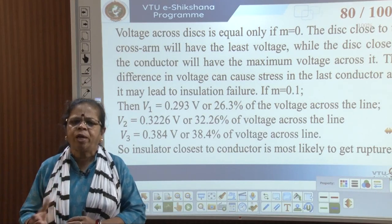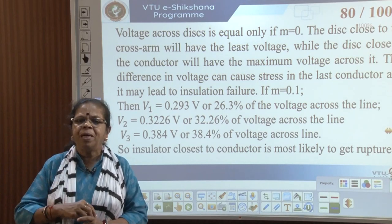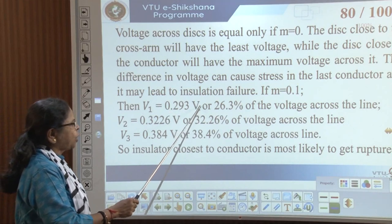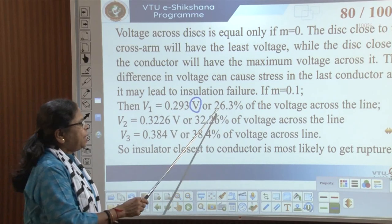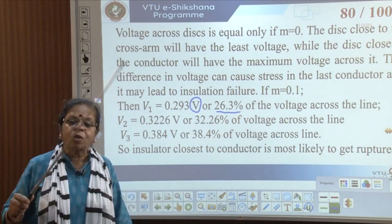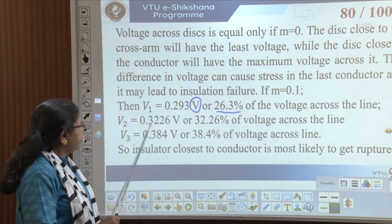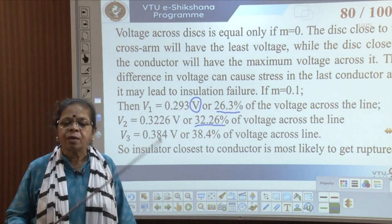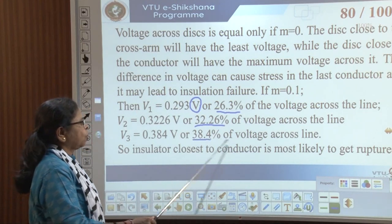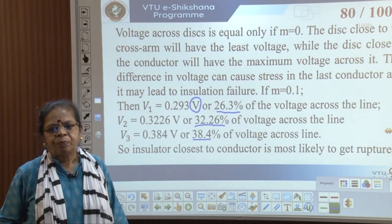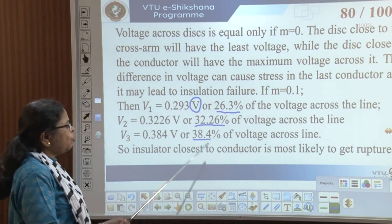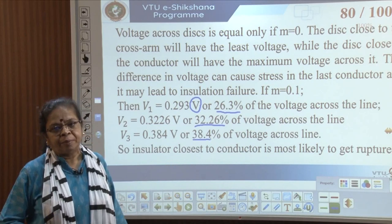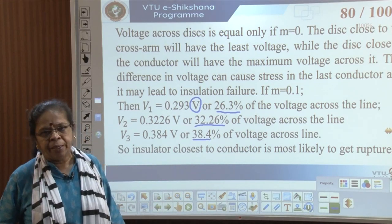M typically has a value of around 0.1. Even with M = 0.1, V1 = 0.293V (26.3% of total), V2 = 32.26%, and V3 = 38.4% of the total transmission voltage. The disk closest to the conductor has the highest voltage and therefore the highest probability of rupturing.